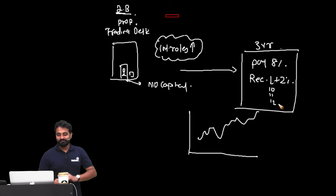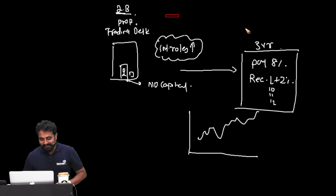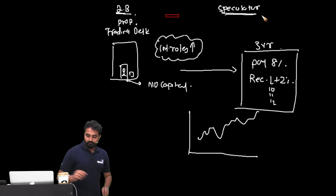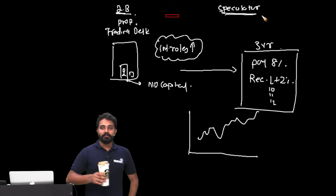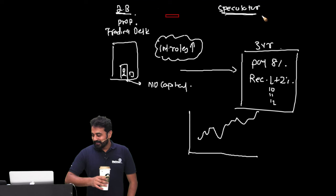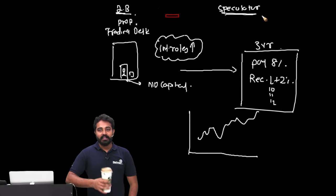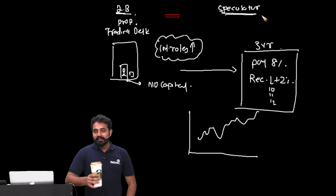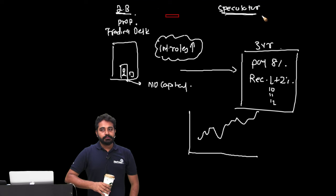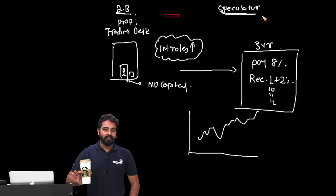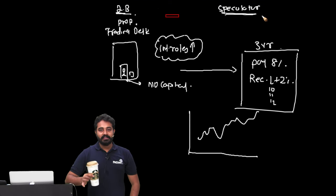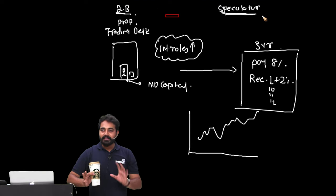If his opinion is wrong and interest rates go down instead, then he's in trouble — that's where the risk management comes in. Just by having an opinion on the market and entering into a swap, a trader can structure a profitable transaction. As interest rates start moving in your direction, your profitability starts increasing. This is the speculator using swaps.